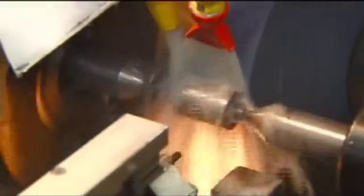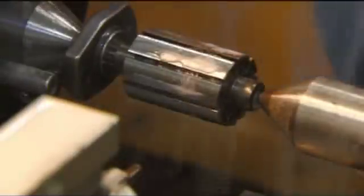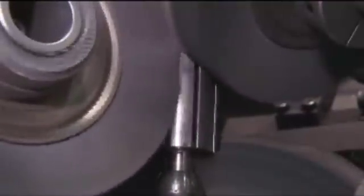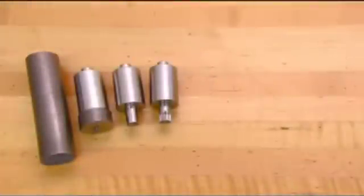Once the rotor cools, a computer-controlled grinder shapes it to the final specifications. Then a machine with nylon bristles smooths the surface. This completes the transformation from steel bar to rotor.